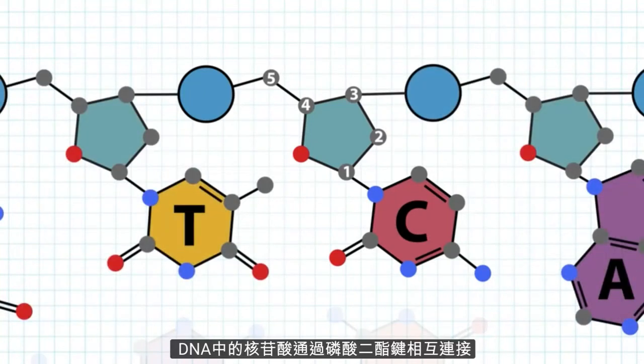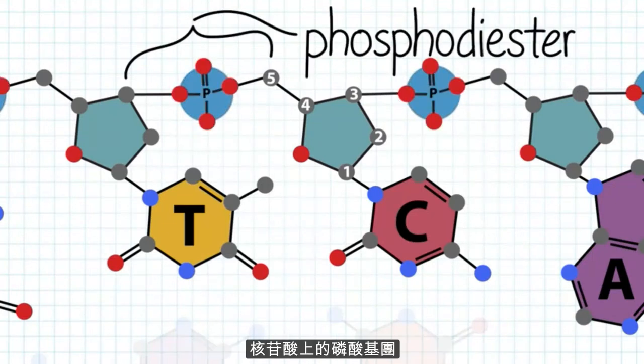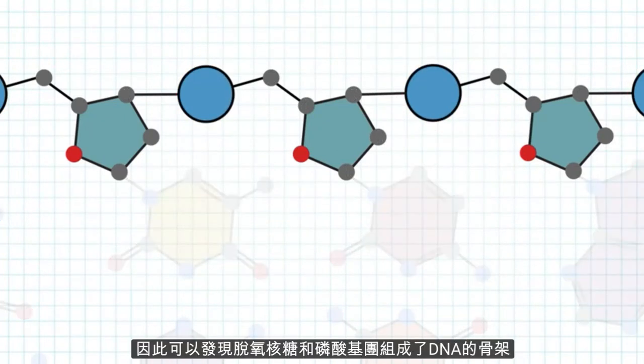Nucleotides attach to each other in the DNA strand by phosphodiester bonds. The phosphate group of one nucleotide binds to the 3' oxygen of the neighboring nucleotide. Thus, we can see that the sugars and phosphate groups make up the DNA backbone.